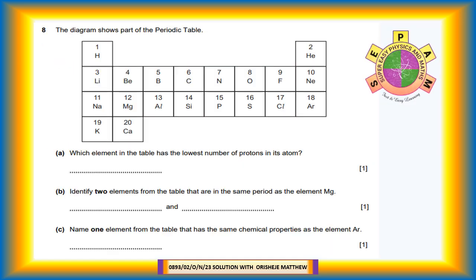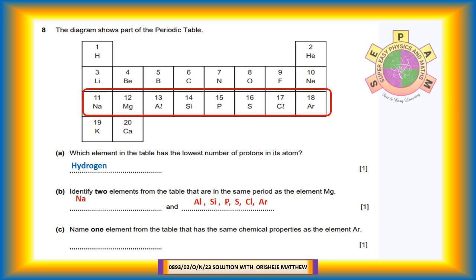Question 8. The diagram shows part of the periodic table. The given periodic table shows the first 20 elements. Question 8a: Which element in the table has the lowest number of protons in its atom? Hydrogen has only one proton in its nucleus. Question 8b: Identify two elements from the table that are in the same period as the element magnesium. Sodium, aluminum, silicon, phosphorus, chlorine, argon are all in period 3. They all have three shells in their atoms.